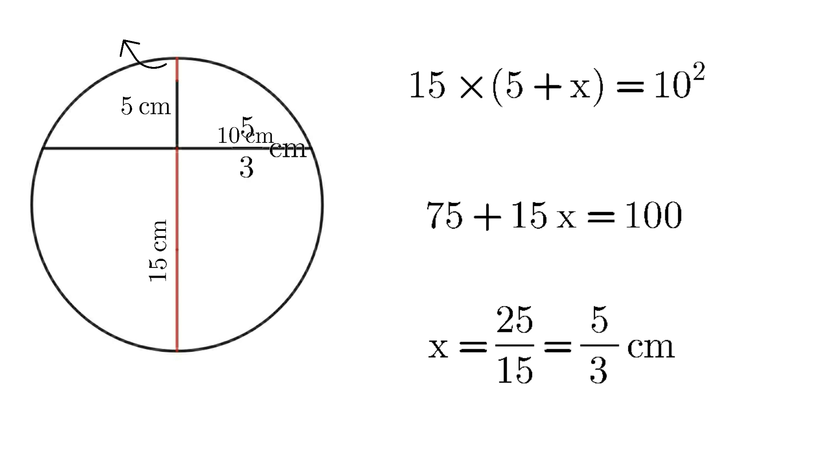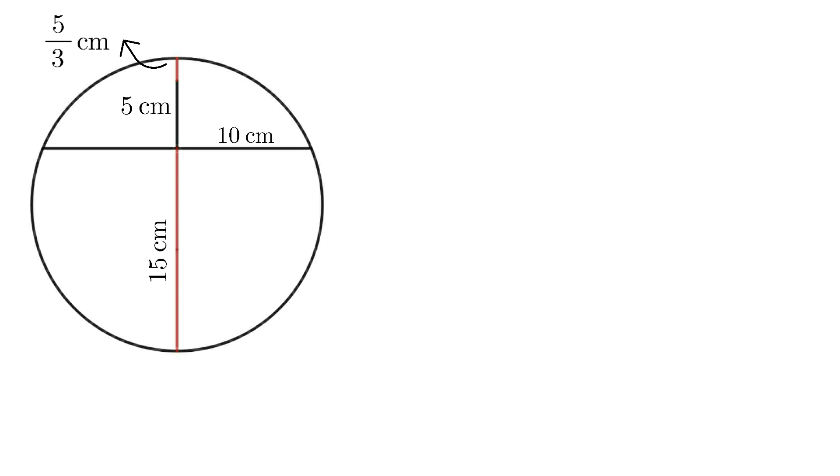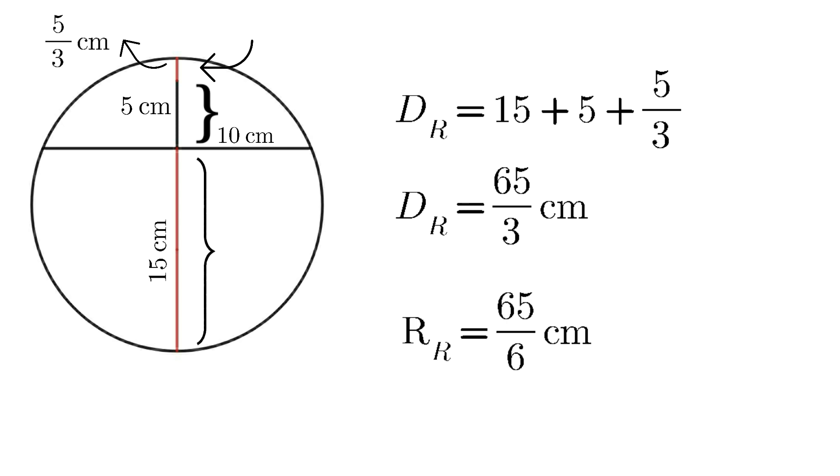The diameter of the third circle equals this length plus this length plus this length. That is, diameter = 15 + 5 + 5/3, which equals 65/3. So the radius of the third circle equals 65/6 cm.